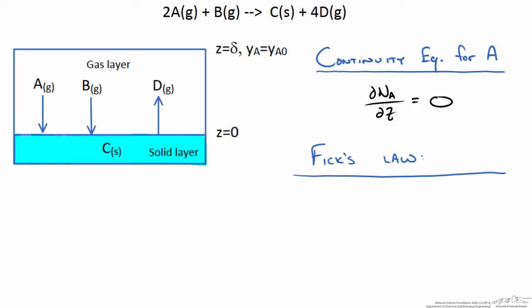When we write out Fick's law for the flux of A in the z direction we get negative concentration times the diffusivity of A through B, dy/dz. This is the diffusive part. The bulk flow or convective part is the mole fraction yA times the flux of A plus the flux of B plus the flux of D. We do not consider C because that is a solid layer and it is not fluxing.